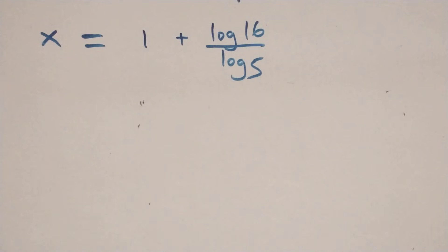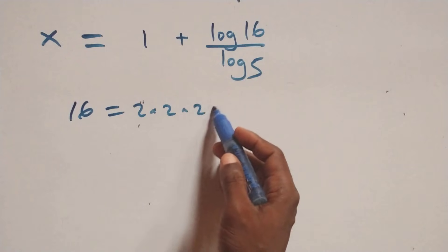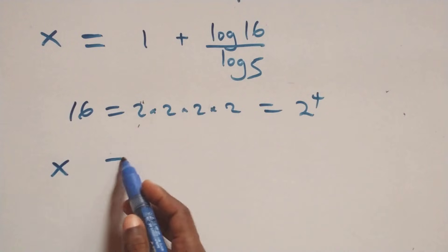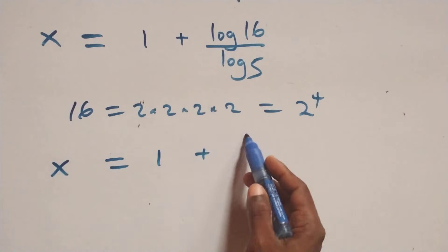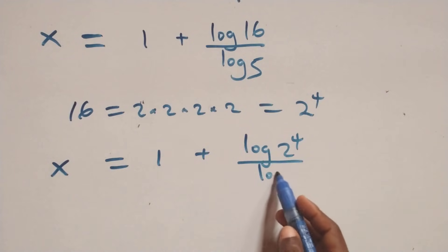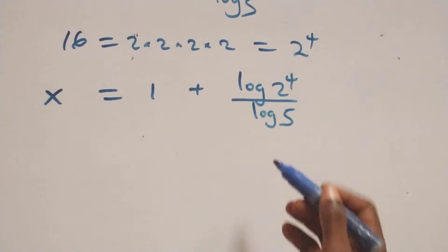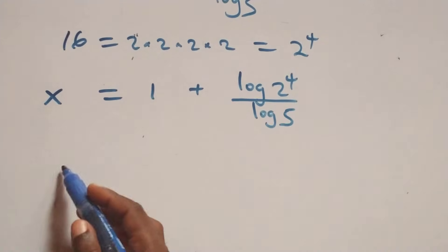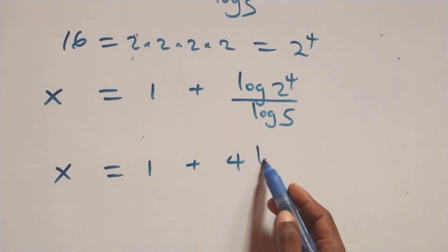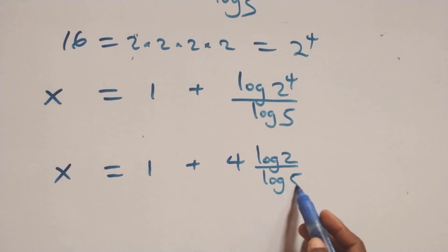Then next step here, we can write 16 as 2 times 2 times 2 times 2, which is the same as 2 raised to power 4. So here we have x equals to log of 2 to the power 4 over log 5. At this point we apply the power rule of logarithms, and we have x equals to 1 plus 4 log 2 over log 5, which is x equals to 1 plus 4 log 2 base 5.